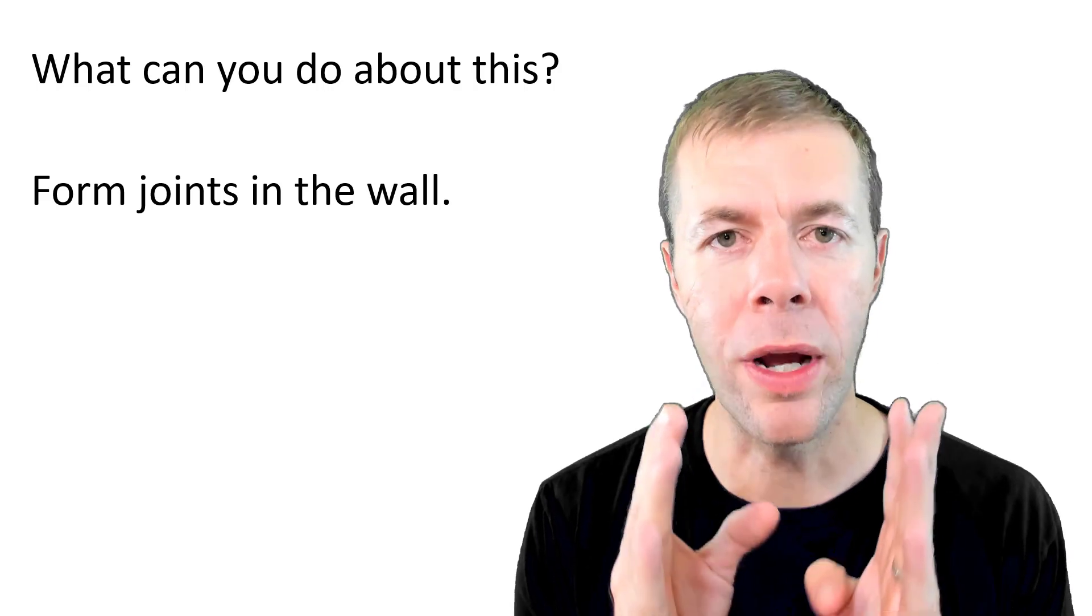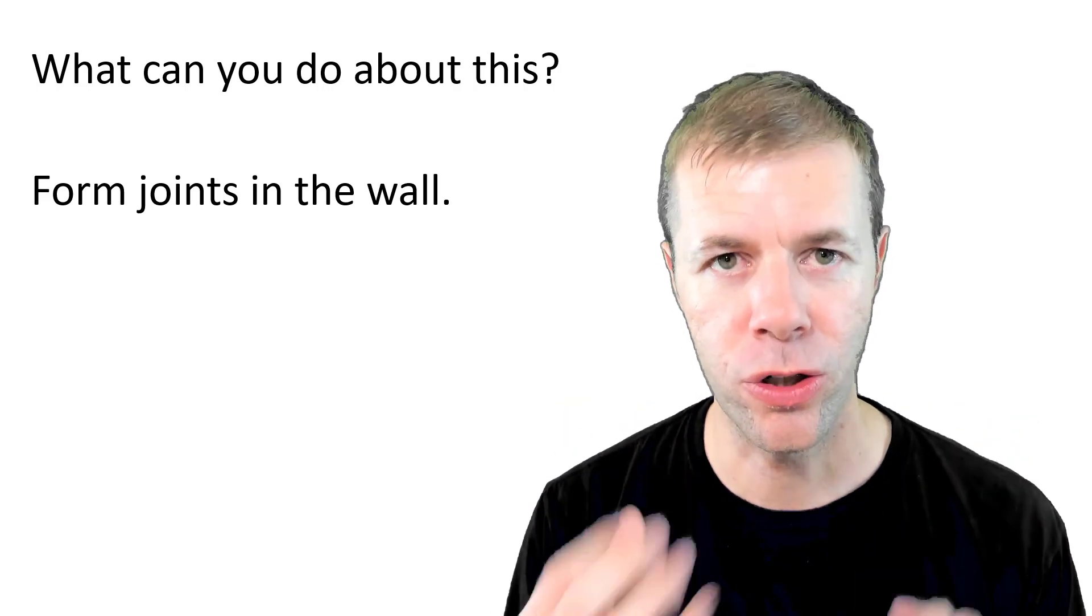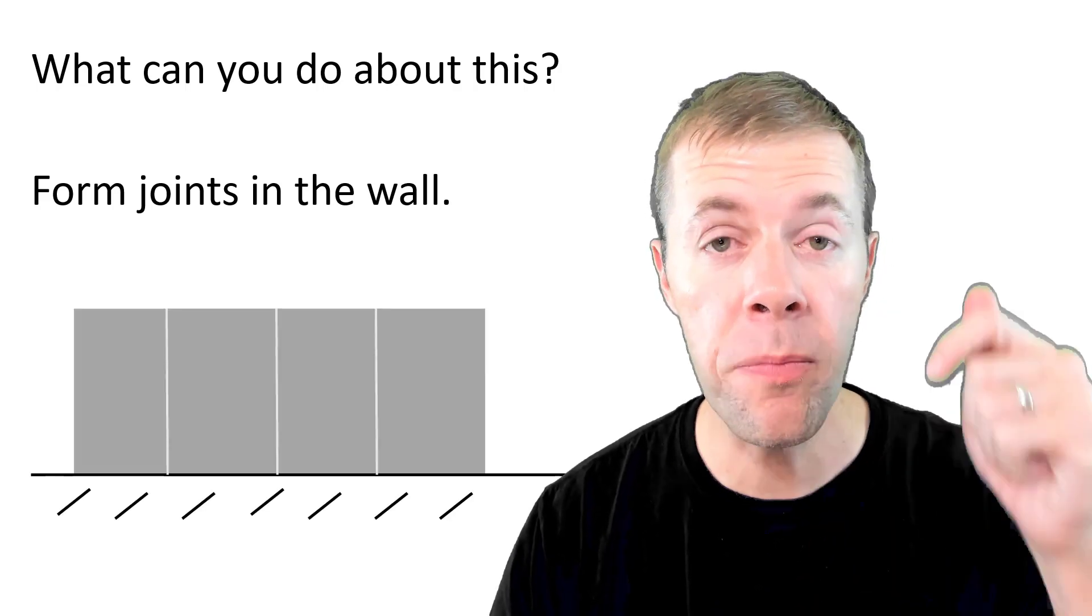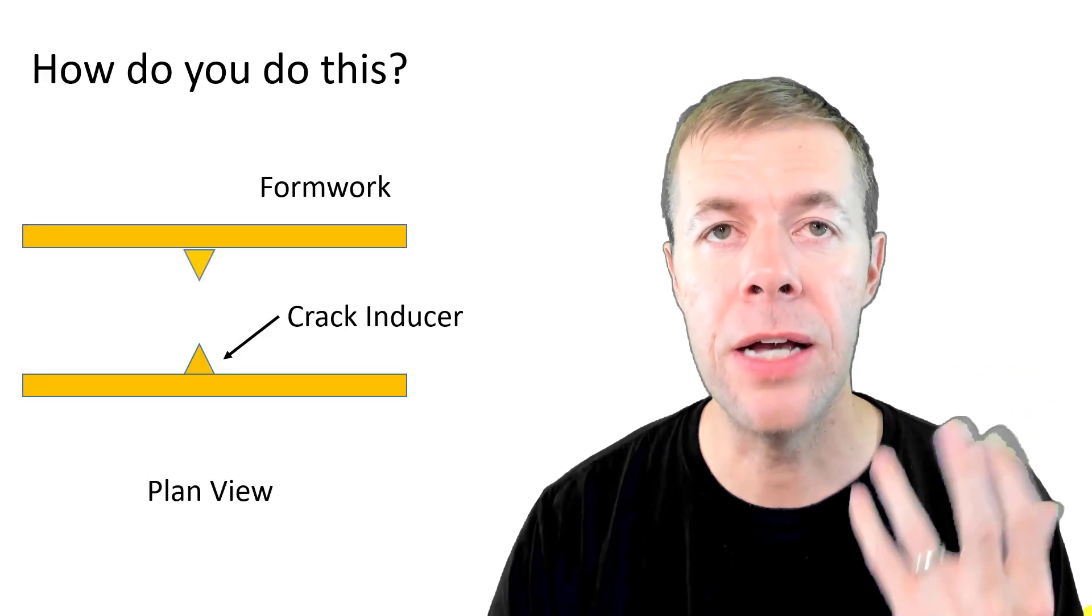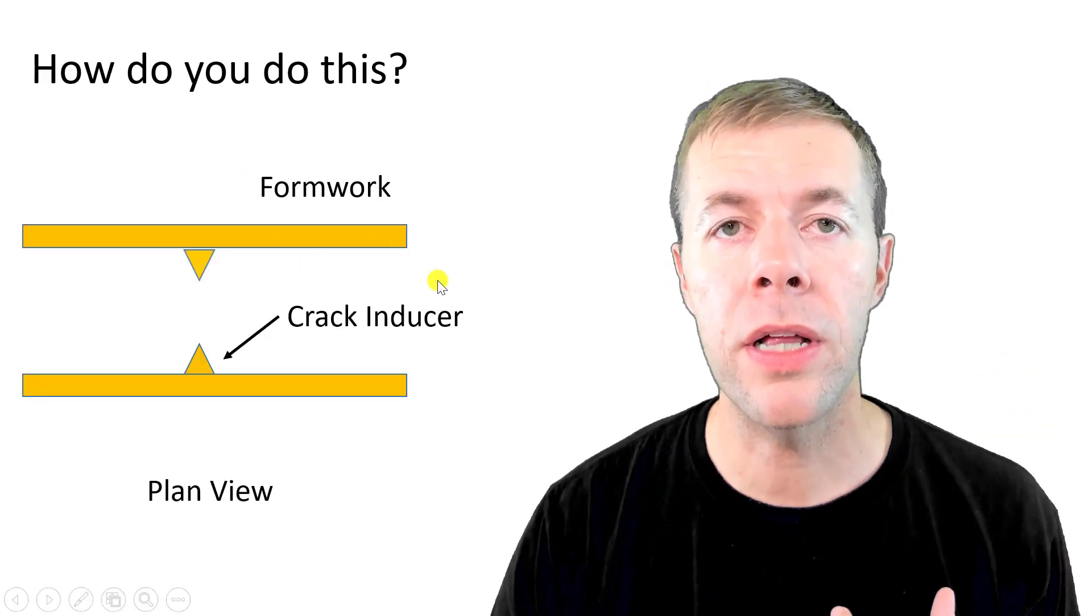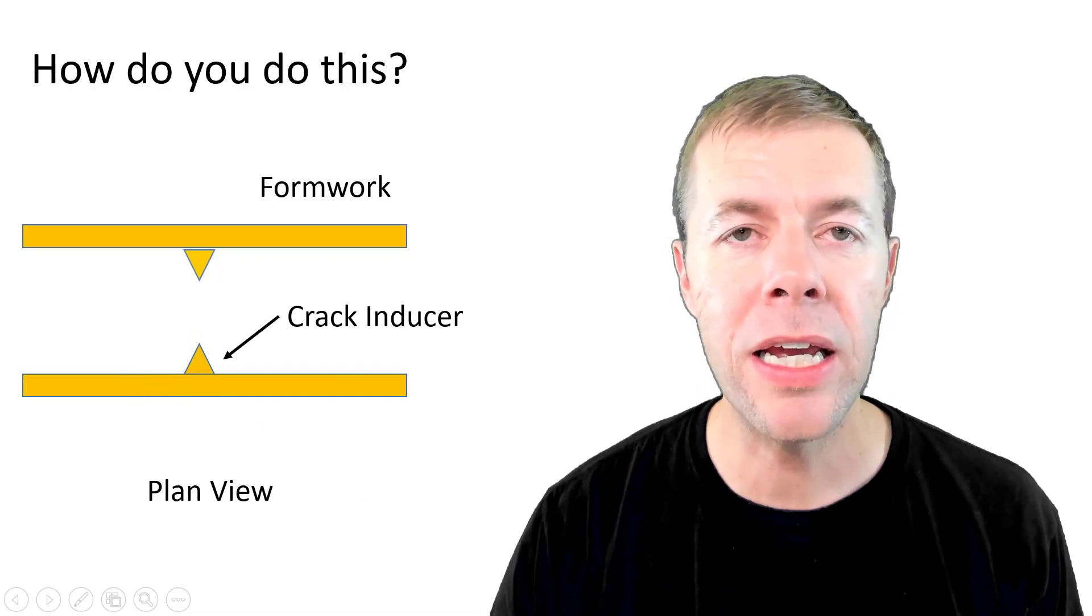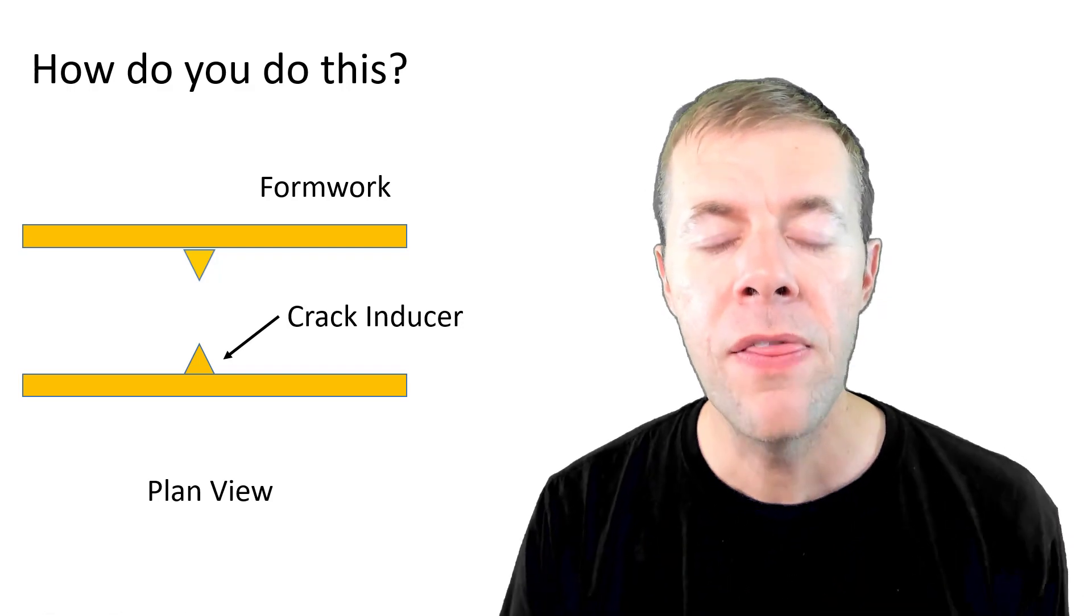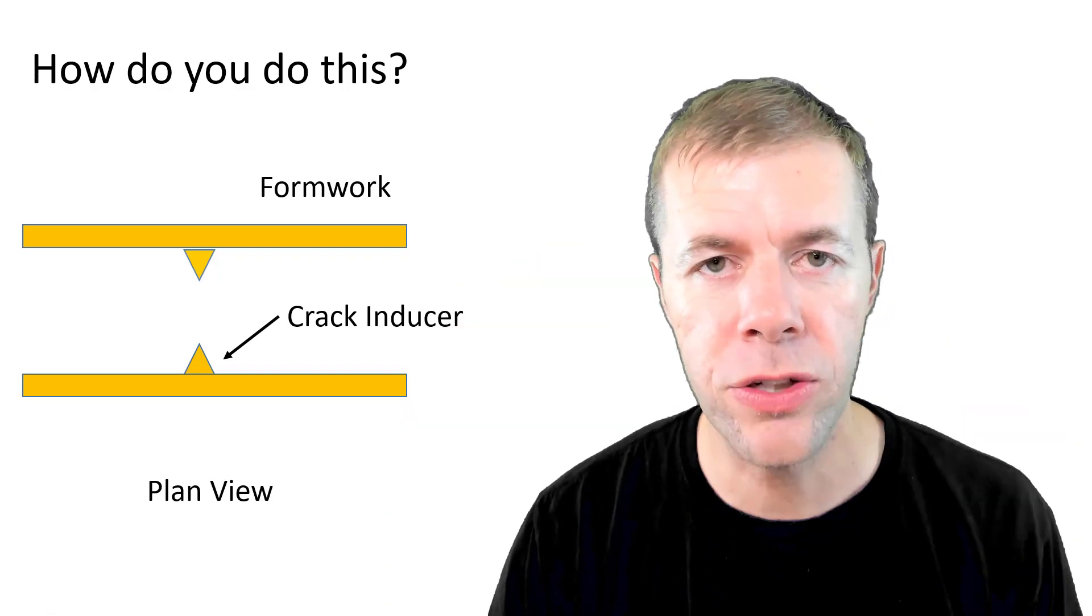You actually form joints in the wall when you're making the structure. Let me show you what I'm talking about. I'm going to look in plan view, or from the top on this wall during construction. I've got formwork, that's the wood stuff around the outside. And I've got this thing called a crack inducer. That's just a small chamfer or piece of wood that's at both sides of the wall.